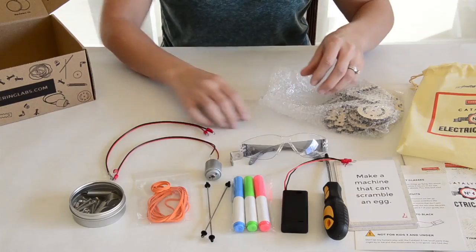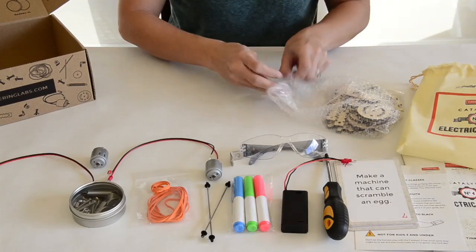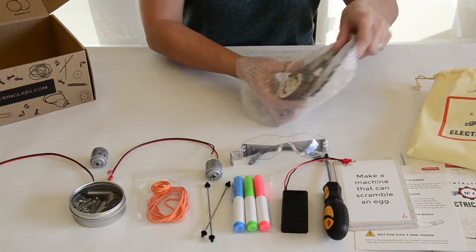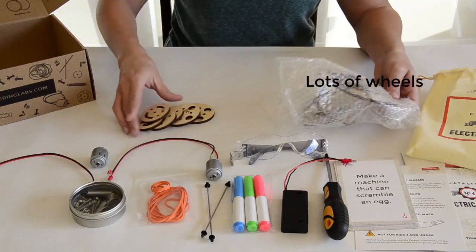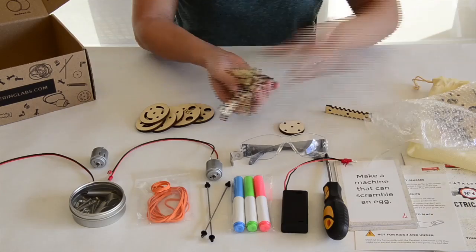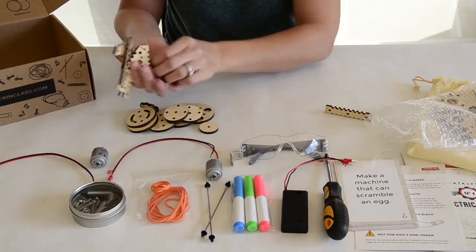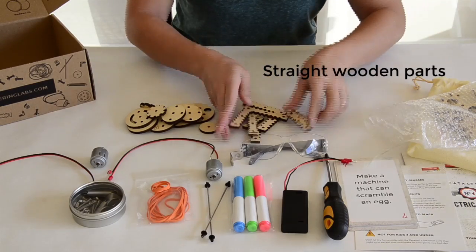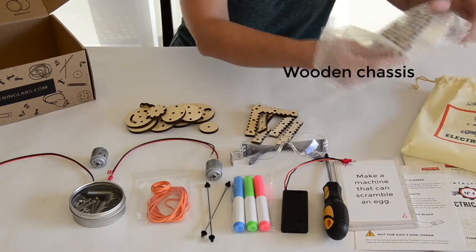And then we have all of these laser-cut wooden parts. There are tons and tons of wheels - big ones, small ones, little gear-shaped ones - and lots of straight wooden parts to connect different pieces together.